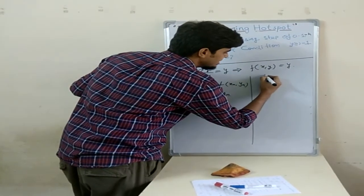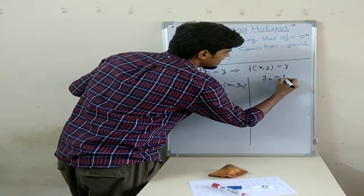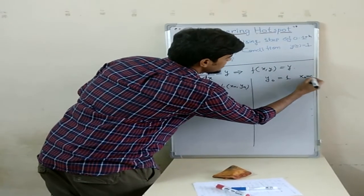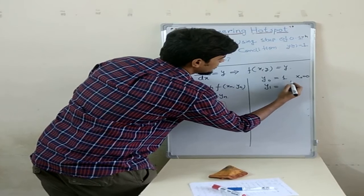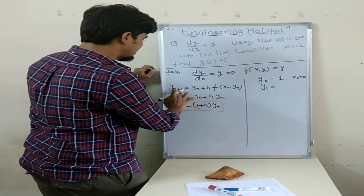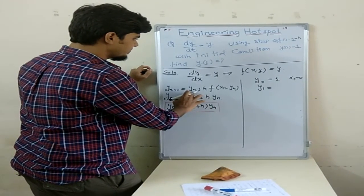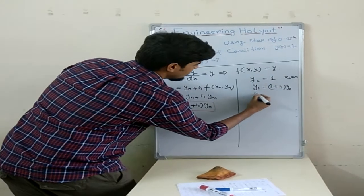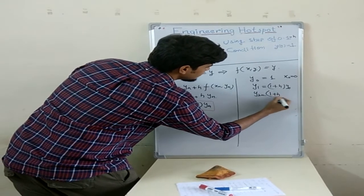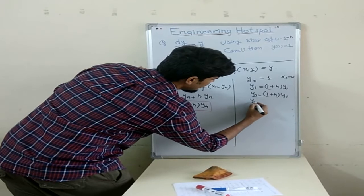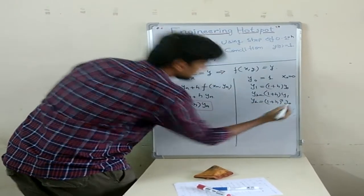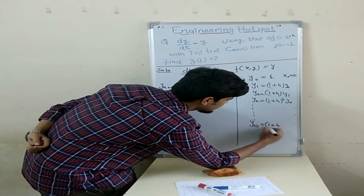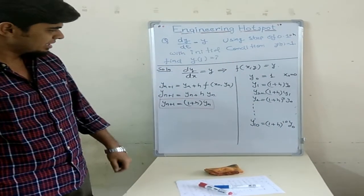Now, what is y(0)? y(0) is 1. y(0) is nothing but at x equals 0, y is 1. And x(0) equals 0. y(1) equals to 1 plus h times y(0). y(2) equals to 1 plus h times y(1). Put y(1) here. y(2) equals to (1 plus h)^2 times y(0). So like that, y(10) equals to (1 plus h)^10 times y(0).